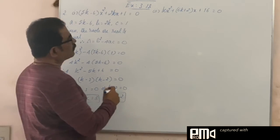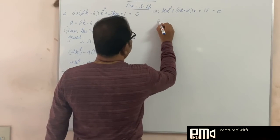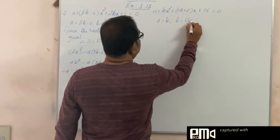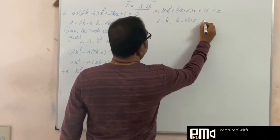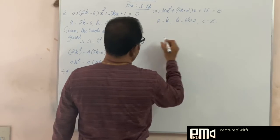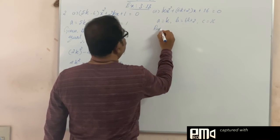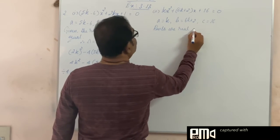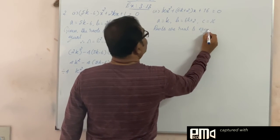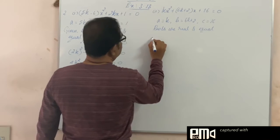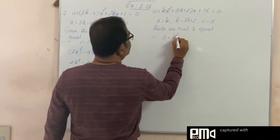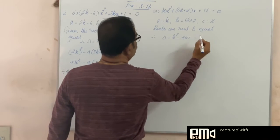Similarly, let us see that. The equation is kx square plus (6k plus 2)x plus 16 equals 0. Roots are real and equal. Therefore, our delta is equal to b square minus 4ac is 0.